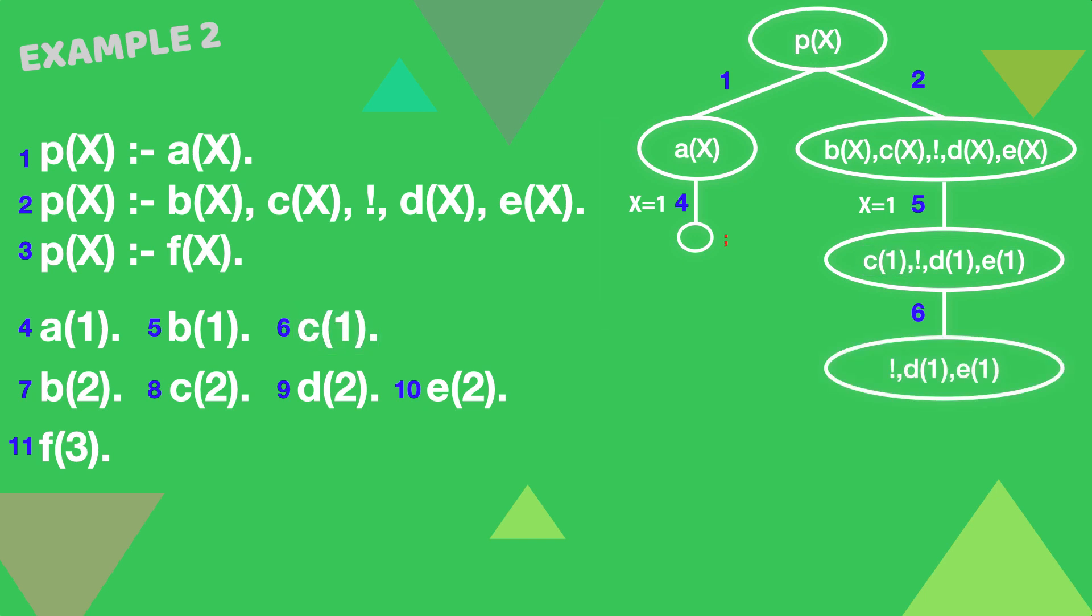Now we've reached the cut, which succeeds and introduces controls on backtracking. This means that when d(1) fails, there are no other branches left in the search.